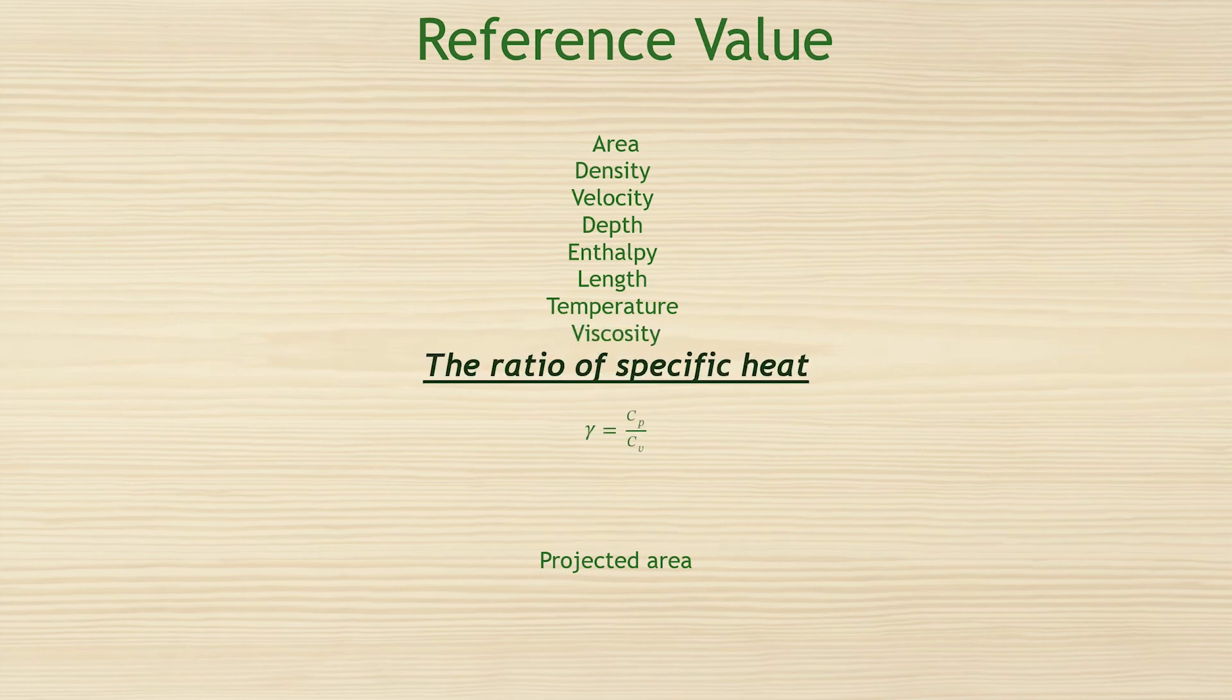Also, the ratio of specific heat is used for the efficiency of turbo machinery. So all of these parameters are so important to extract the accurate results for dimensionless numbers.